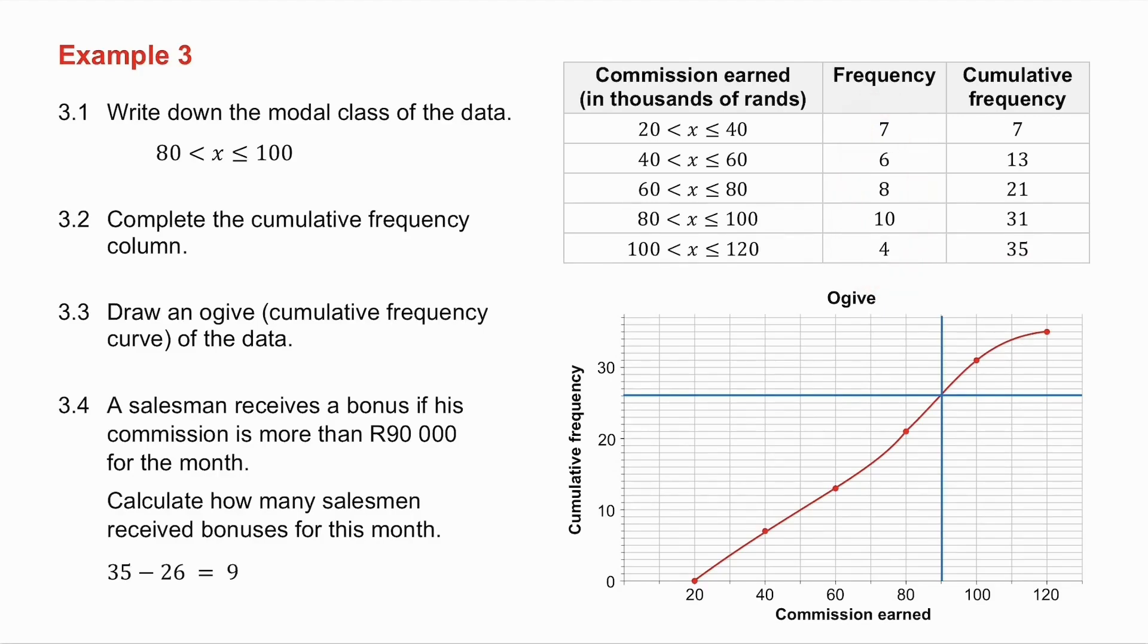They ask me to draw an ogive. And when you draw an ogive, you take the highest value. So I plot 47, which is there. 60, 13, all the way up to 120, 35. Remember I ground it to the lowest value, and I draw a curve.